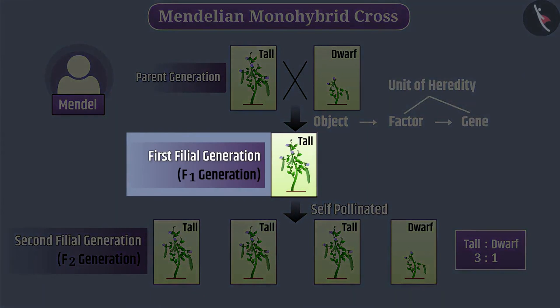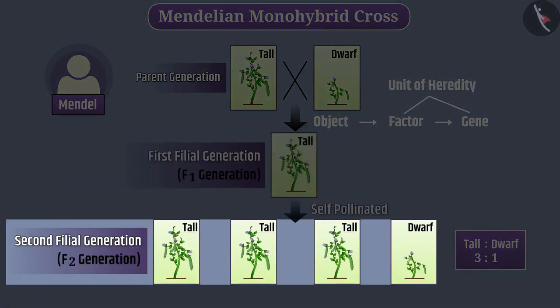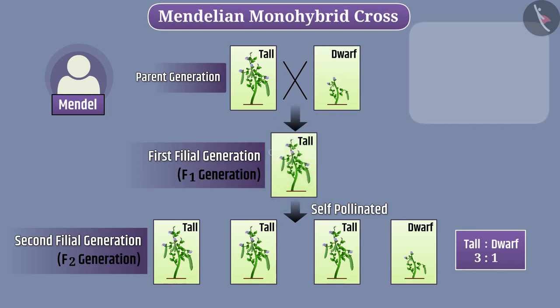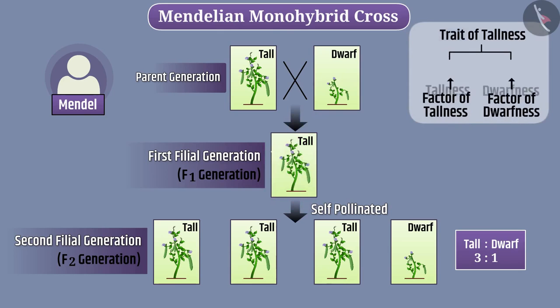All F1 generation plants were tall, but the F2 generation had a mixture of tall and dwarf plants, meaning that F1 generation plants must have inherited both tallness and dwarfness traits from the parent generation. Therefore, there must be both the factors — that is, tallness and dwarfness — present in the F1 generation plant. However, only the trait of tallness gets expressed.